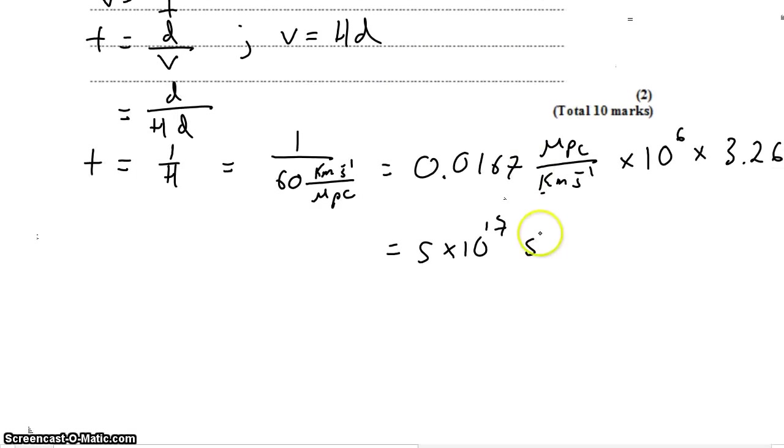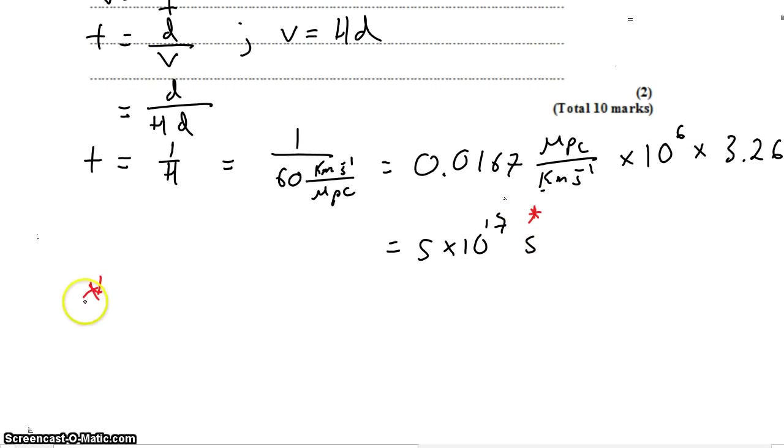There's an asterisk here. Because the assumption that we made when we developed this equation was that the Hubble constant is constant. So since the beginning of the universe, the Hubble constant has been the Hubble constant and hasn't changed. There's evidence that it has changed and is still changing. So that is not necessarily a safe assumption, but that's the assumption that we had to make.